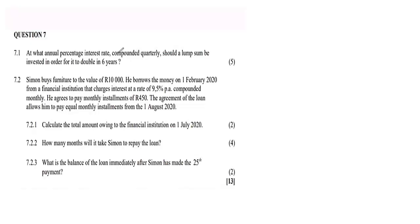Question 7.1 — still on financial math. It says: at what annual percentage interest rate, compounded quarterly, should a lump sum be invested in order for it to double in six years? A lump sum is some amount x. This x needs to be invested so that it doubles, becoming 2x, over a period of six years with interest compounded quarterly.